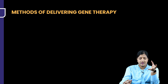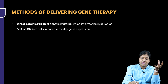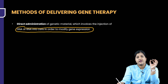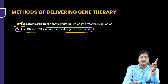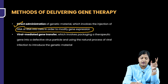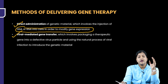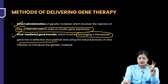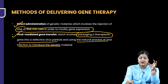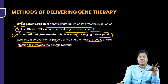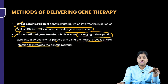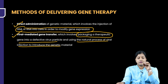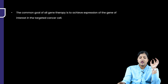What are the methods of delivering gene therapy? The first method is direct administration, which involves giving DNA or RNA into the cell directly in order to modify gene expression. The second method is viral-mediated gene transfer, which involves packaging the therapeutic gene into a defective virus particle and using the natural process of virus infection to introduce the genetic material into the cell.